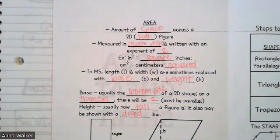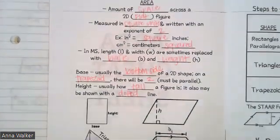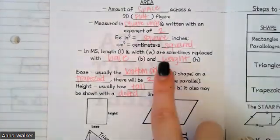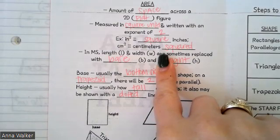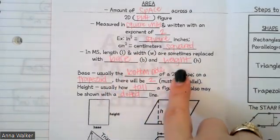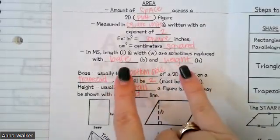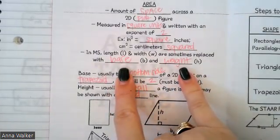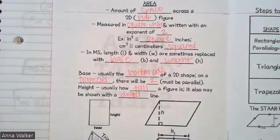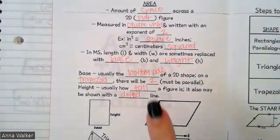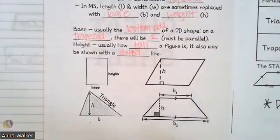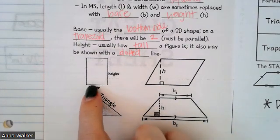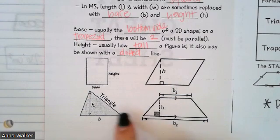In middle school, when we look at different dimensions in our shapes, we use length and width — especially in rectangles, squares, and parallelograms — but sometimes they're replaced with base and height because base and height are more common in these kinds of shapes. Our shapes like triangles and trapezoids have bases and heights. So understanding what base and height are: the base is usually the bottom side of a two-dimensional shape. You can think about this bottom line as being the base of the shape.